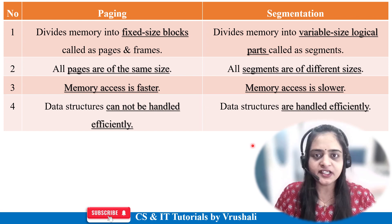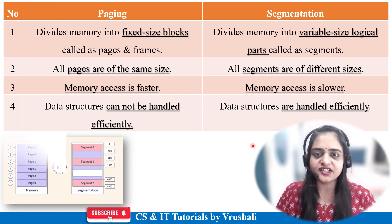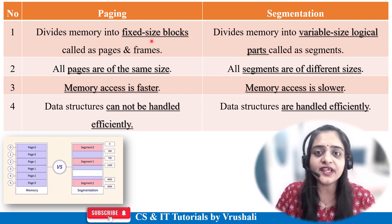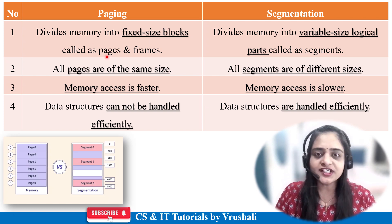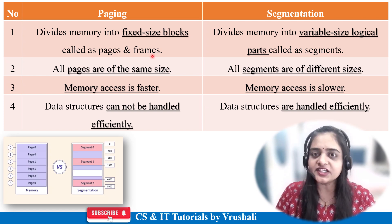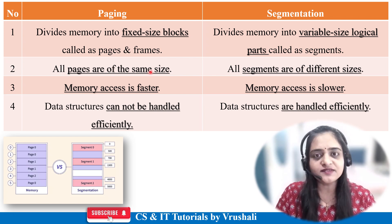Now let's look at this comparison table showing the difference between paging and segmentation. In paging, the operating system divides the complete memory into fixed-size blocks. Logical memory is divided into fixed-size blocks called pages, and physical memory is divided into fixed-size blocks called frames. That's why all pages are of the same size — it uses fixed partitions.